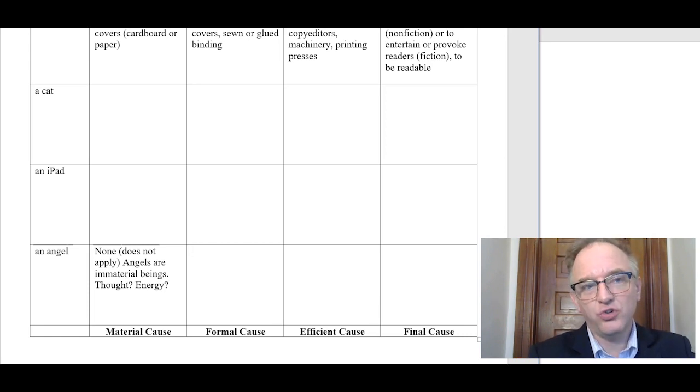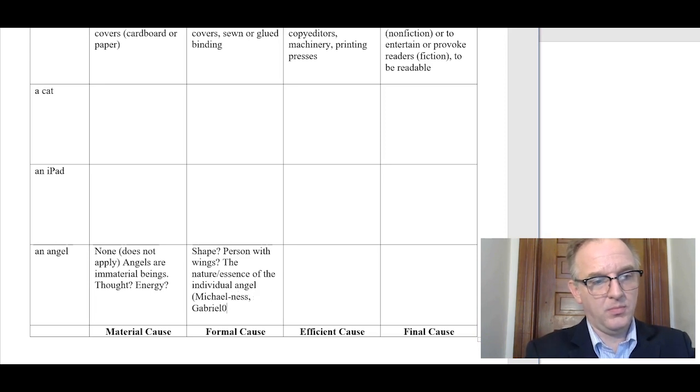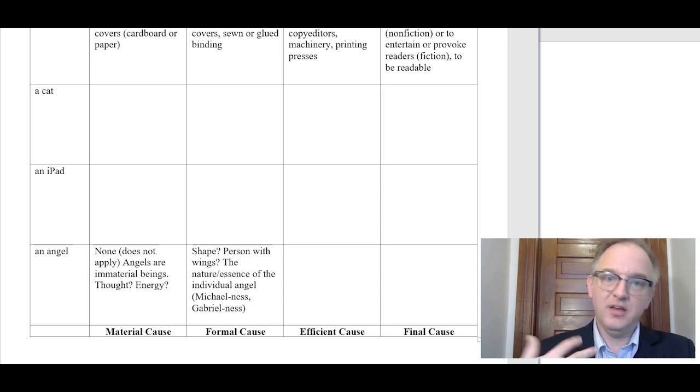What about the formal cause? Formal cause of an angel. Is there a shape to being an angel? We think sometimes of a person, maybe a baby with wings. That's more of a sort of imaginative representation of angels. Angels don't have to look like that because they don't have any physical existence necessarily. To give a real theologically correct answer, I think we'd have to say something like the nature or the essence, the genus of each individual angel. So the archangel Michael somehow has the formal cause of being Michael, of Michael-ness or Gabriel-ness in the case of other angels. That gets us into the theology of angels, which is beyond our purpose here.